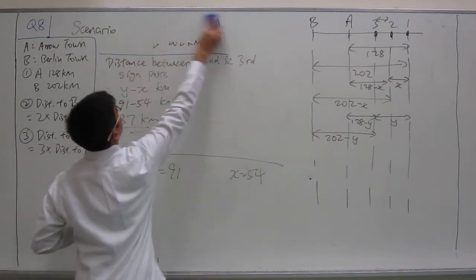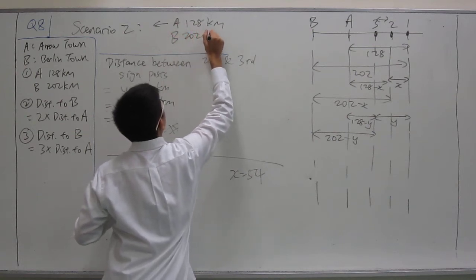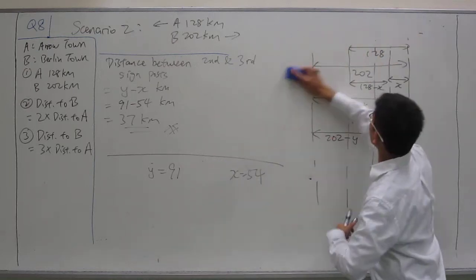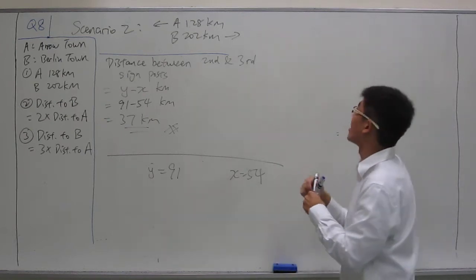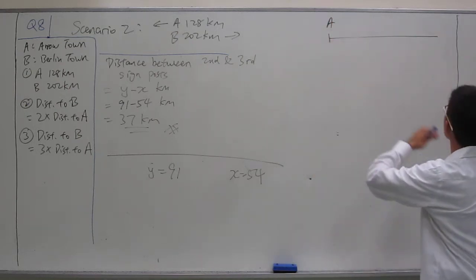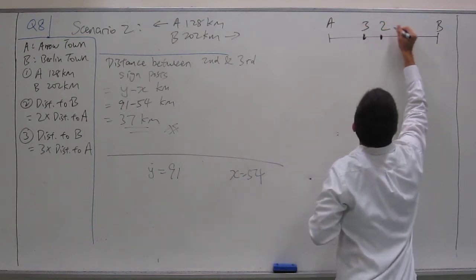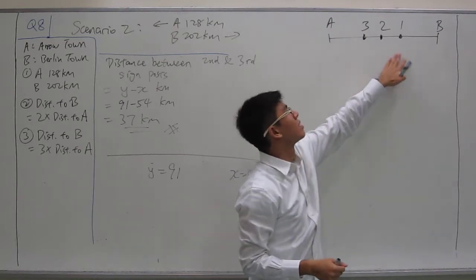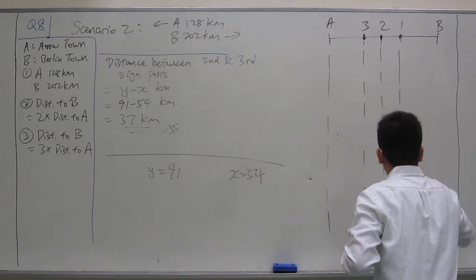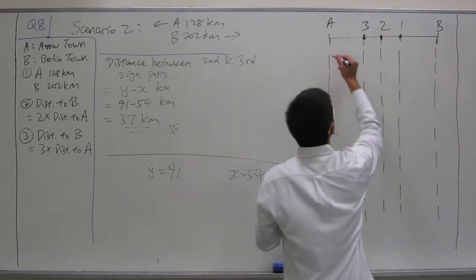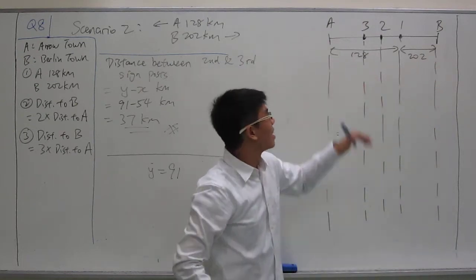Now let's look at scenario 2. We draw a diagram again. In this case, AeroTown is in front of Kelvin and Berlin Town is behind Kelvin. The three signposts are in the middle, and since Kelvin is moving towards AeroTown, the signposts appear in order 1, 2, 3. From the first signpost, we know distance to B is 202 and distance to A is 128.